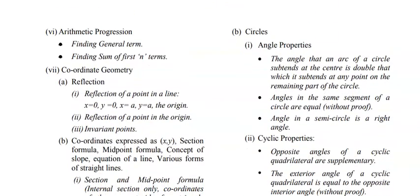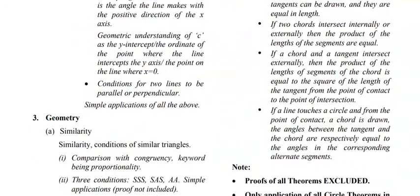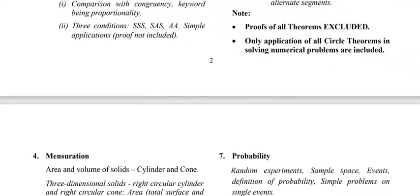In Geometry for Semester 2, you have Circles: angle properties, cyclic properties, and tangent and secant properties. Note that proof of all theorems is excluded — no theorems will be asked for you to prove. Only the application of all circle theorems is required. You solve problems related to those theorems, but nothing beyond that.